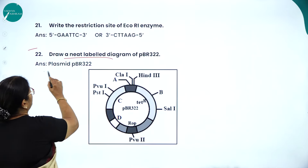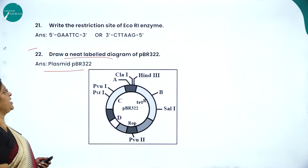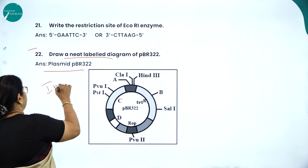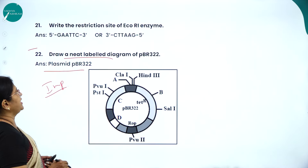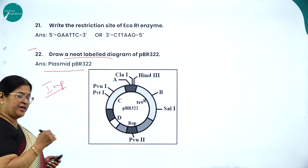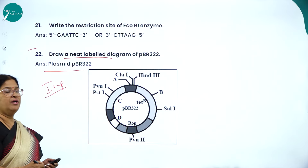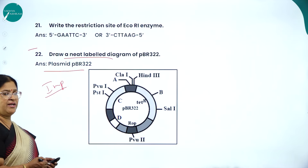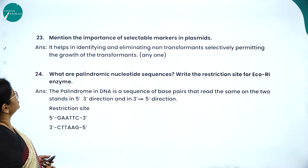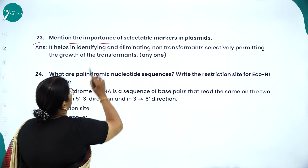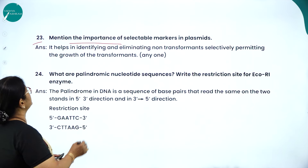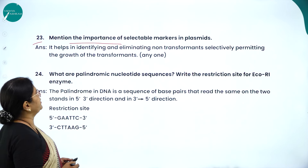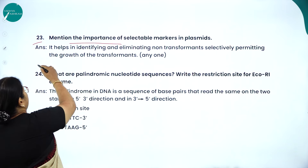The restriction site of EcoRI enzyme is 5'-GAATTC-3' / 3'-CTTAAG-5'. Draw a neat labelled diagram of pBR322 — plasmid of Bolivar and Roderick, strain number 322 — this is a very important diagram from this chapter. The importance of selectable markers in plasmids: they help in identifying and eliminating non-transformants while selectively permitting the growth of transformants.